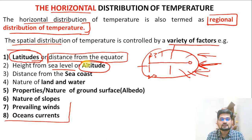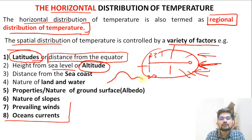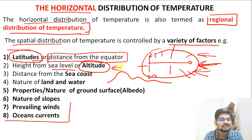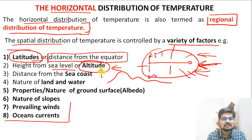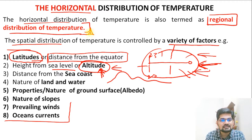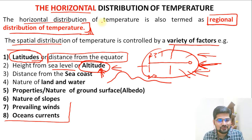Height from sea level — altitude — is another important factor, related to altitudinal zonation. With varying altitude on earth, there is a difference in the distribution of temperature. Recall from Humboldt and Ritter's lecture: when Humboldt went to South America, he found the impact of altitude on temperature differences and altitudinal sickness. With altitude, temperature differs, and we will discuss this further when we cover vertical distribution of temperature, where lapse rate is an important phenomenon.